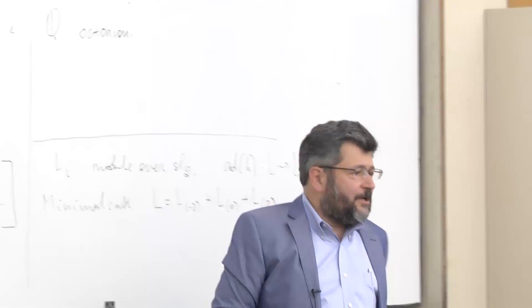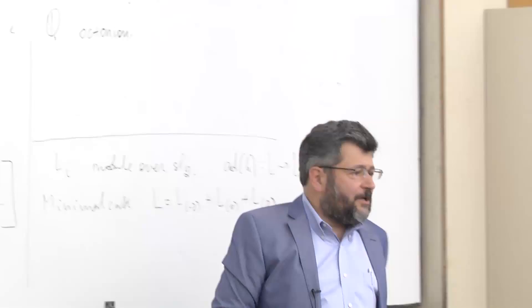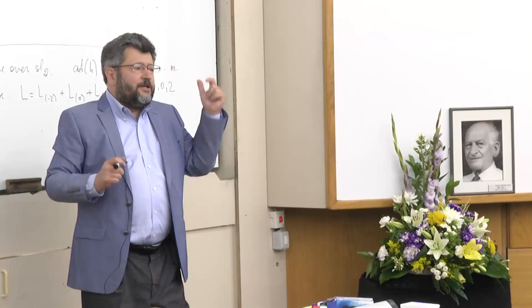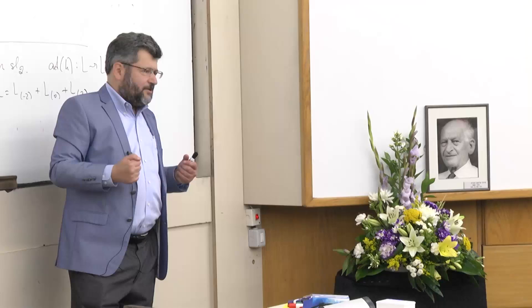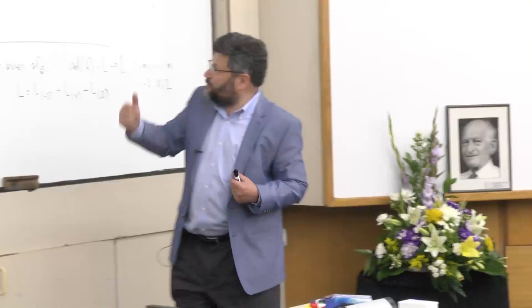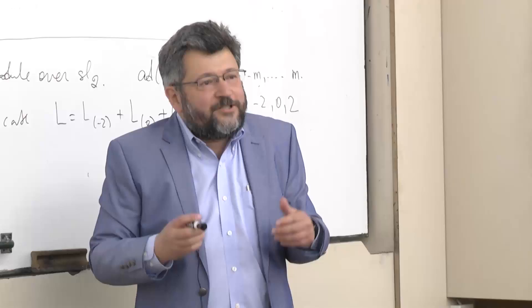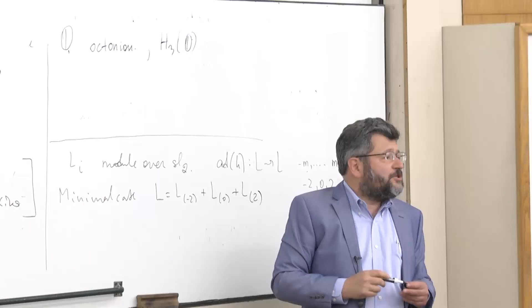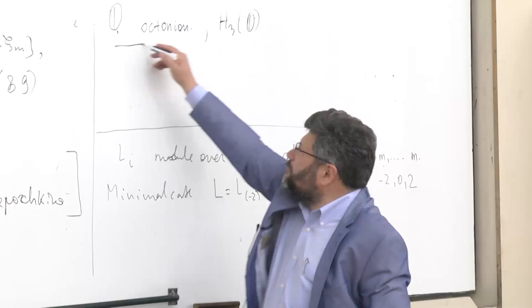And there is the most interesting and important example found by those distinguished authors: if you take the algebra of octonions — a very interesting eight-dimensional algebra — starting with the reals and doubling: real numbers → complex numbers → quaternions → octonions. At each step you lose something. Moving from complex to quaternions you lose commutativity; moving from quaternions to octonions you lose associativity. If you consider Hermitian 3×3 matrices over octonions, that's also a Jordan algebra of dimension 27.